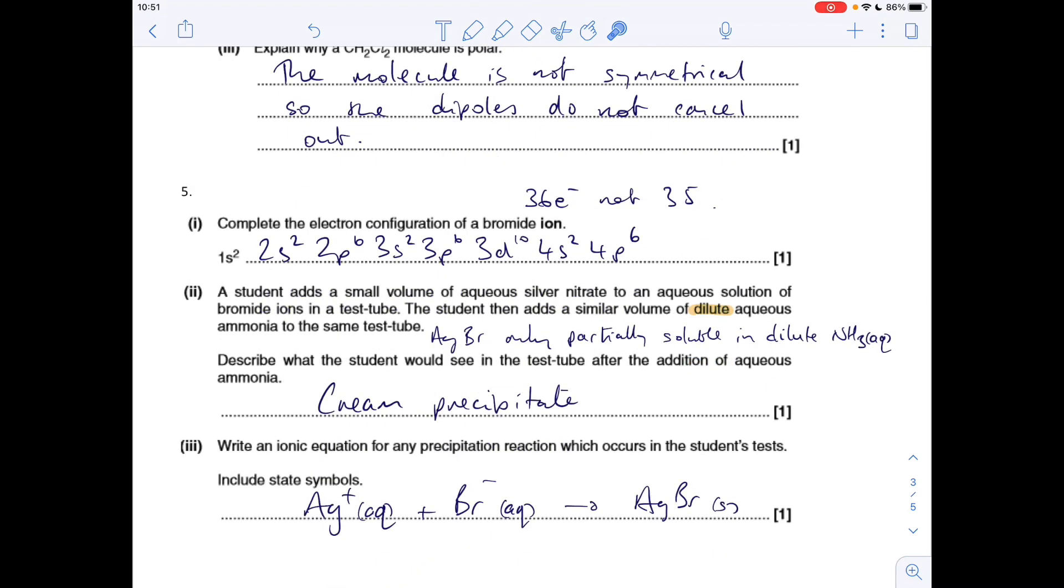Next one, student adds a small volume of dilute silver nitrate to an aqueous solution of bromide ions. Obviously you're going to get a precipitation reaction there. You'll get your silver bromide precipitating out which is cream, the cream precipitate. The student then adds a similar volume of dilute, and I've highlighted that, that's important, dilute aqueous ammonia. There's just a reminder of the solubility - silver bromide is only partially soluble in dilute aqueous ammonia. So therefore the student would still see the cream precipitate. It would still be there, it won't dissolve.